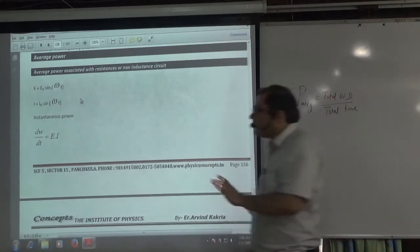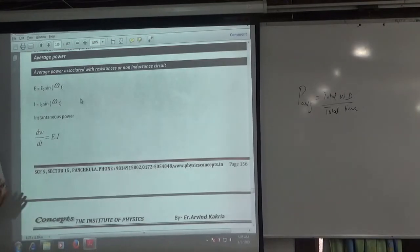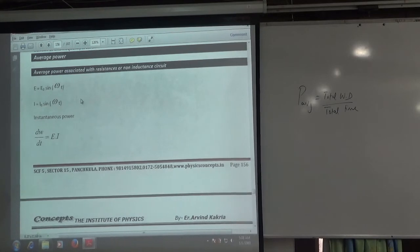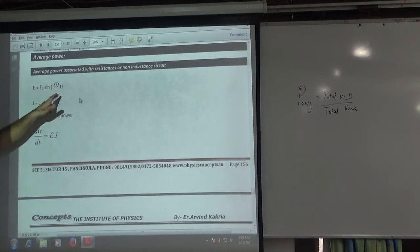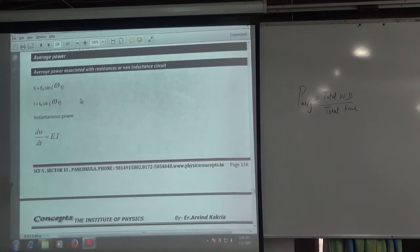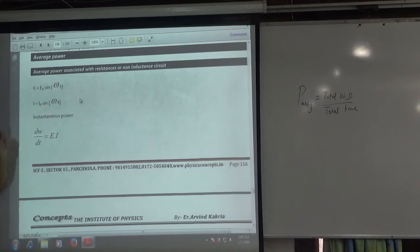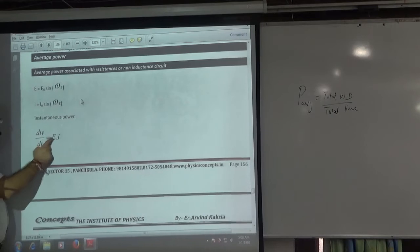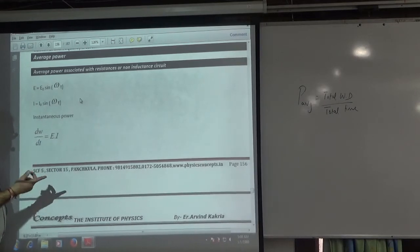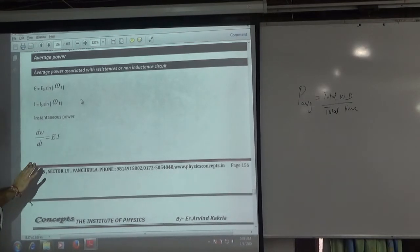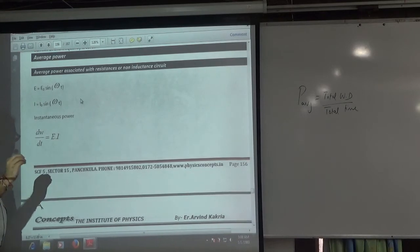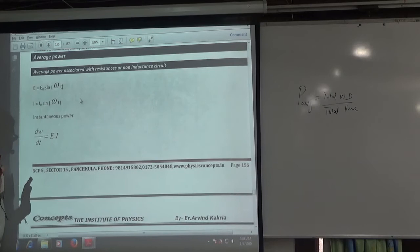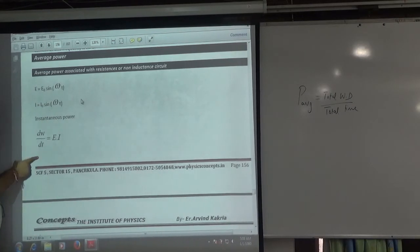Let's start with instantaneous. Look. How much we applied EMF? E is E0 sin omega t. In the resistor, or non-inductive circuit, what is the current? I0 sin omega t. Because E and I are changing in every instant. So, you have to write instantaneous power. You have to use any instant to represent any instant. You have to use a calculus. dW by dt, which is instantaneous power.